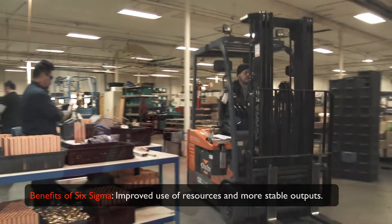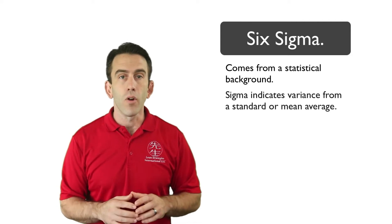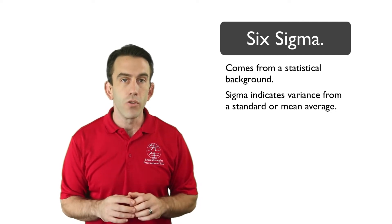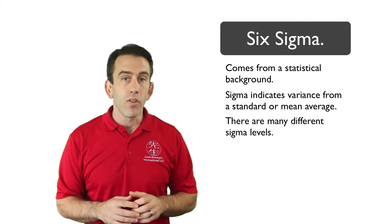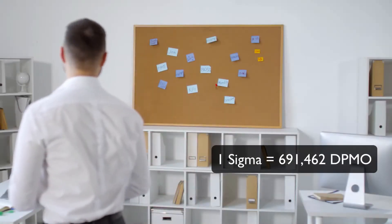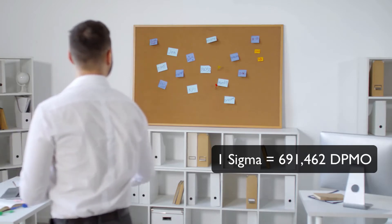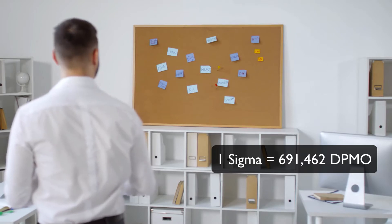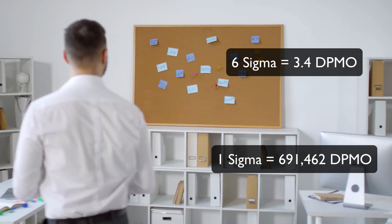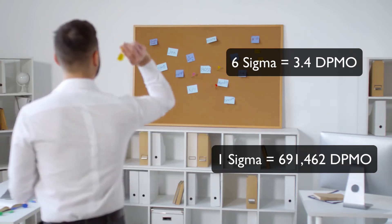The term Six Sigma comes from a statistical background. Sigma is the term used to indicate variance from a standard or mean average. There are many different sigma levels. For example, one sigma would represent 691,462 defects per million opportunities. Six Sigma, on the other hand, refers to a performance level of no more than 3.4 defects per million opportunities.